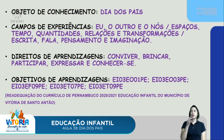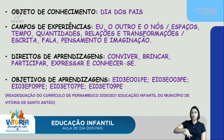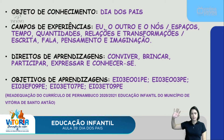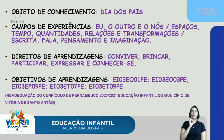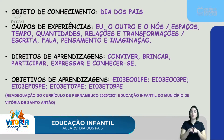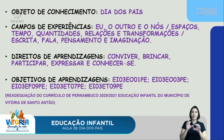Objeto de conhecimento: dia dos pais. Campos de experiência: eu, o outro e o nós; espaços, tempo, quantidades, relações e transformações; escrita, fala, pensamento e imaginação. Direitos de aprendizagens: conviver, brincar, participar, expressar e conhecer-se. E os objetivos de aprendizagens, aqui estão os códigos, de acordo com a readequação do currículo de Pernambuco 2020 e 2021 de educação infantil do município de Vitória de Santo Antão.